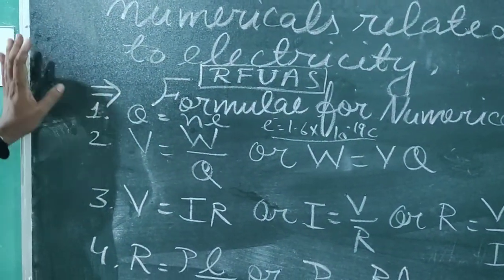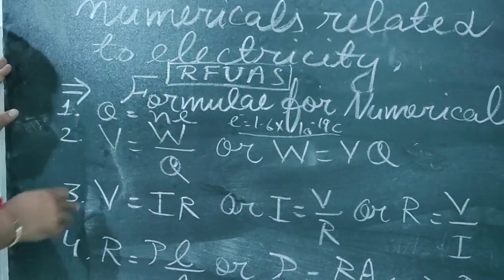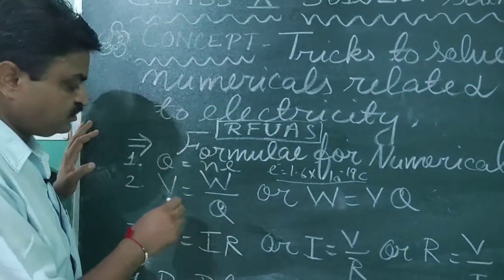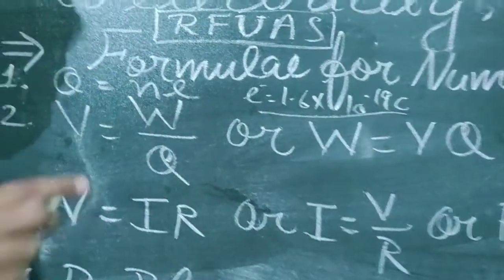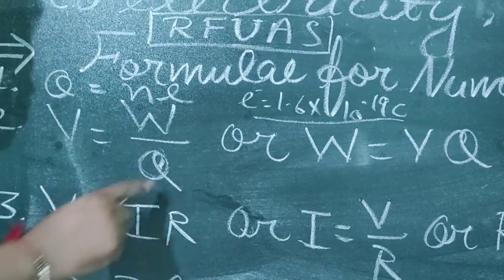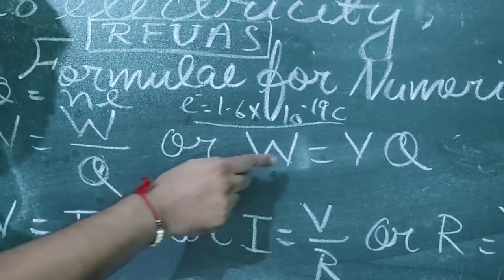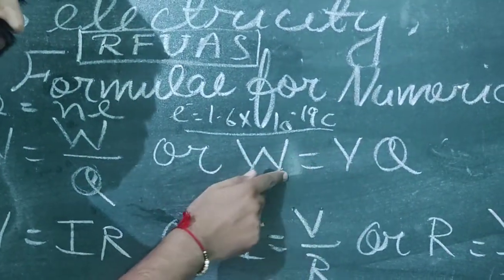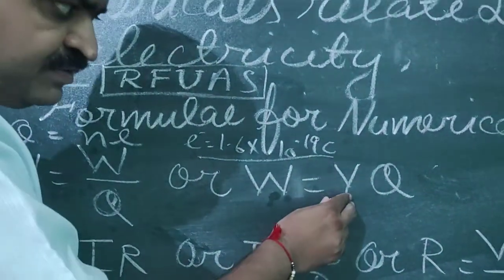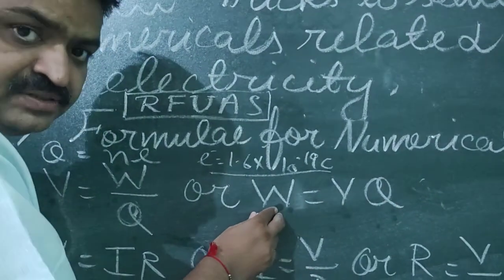The second formula is V = W/Q. V here means electric potential or voltage. So the formula for voltage or electric potential is work upon charge. With the help of this, we can also get the formula for work, which is W = V × Q, where V means voltage and Q means charge.